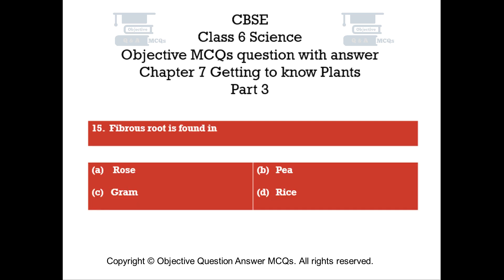Question number 15. Fibrous root is found in. Option A: Rose. Option B: Pea. Option C: Gram. Option D: Rice.